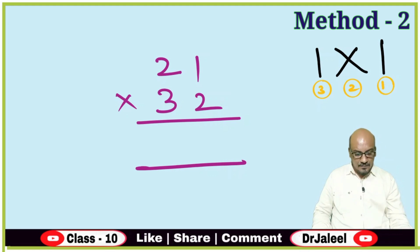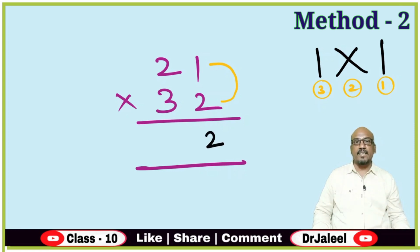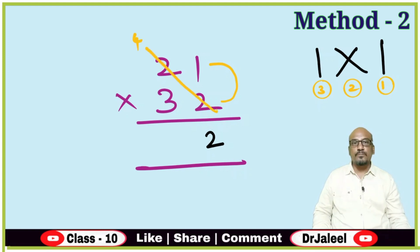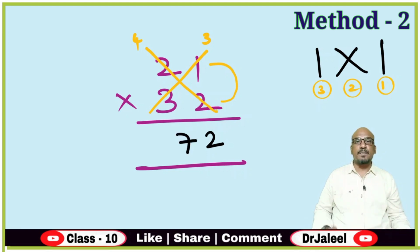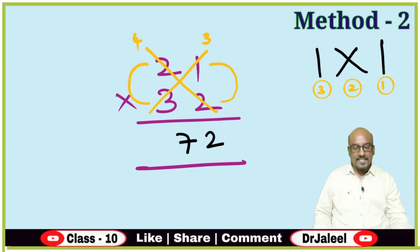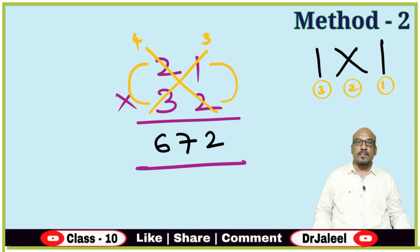First, go with the right side digits: 1 × 2 is 2. Write it directly. If there is any carry forward, note it. Second step, cross multiplication: 2 × 2 is 4, and 3 × 1 is 3. Total: 4 plus 3 is 7. No carry forward, so write 7. Third step, left side digits: 3 × 2 is 6. No carry forward. So the answer is 672.